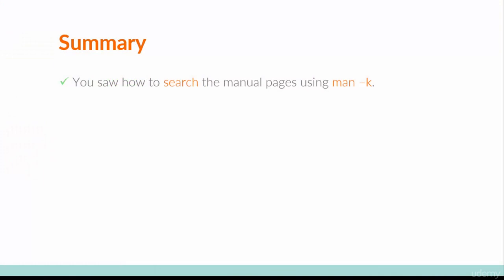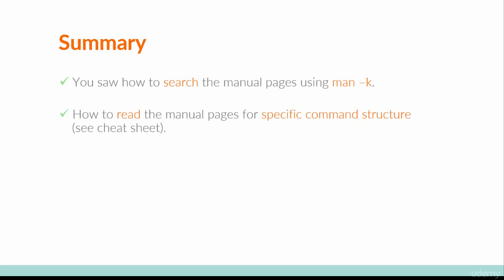We've covered a lot in this video. You saw how to search the manual using 'man -k' followed by any search term, which returns a list of relevant manual pages along with their descriptions and section numbers. You saw how to access specific manual pages and how to read them for command structure — including using the 'which' command's man page — and the different symbols that appear in the SYNOPSIS to tell you how to use a command.